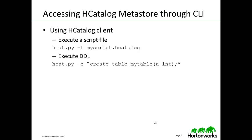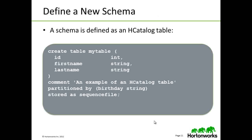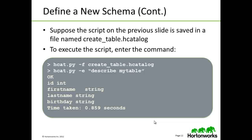H-Catalog has a metastore that can be accessed through the command line interface. Using the H-Catalog client, for example, we can execute a script file or execute a DDL. We can define a new schema — a schema is defined as an H-Catalog table. Suppose that the script on the previous slide is saved in a file named create_table.hcat. We can execute that script by entering the command shown here.